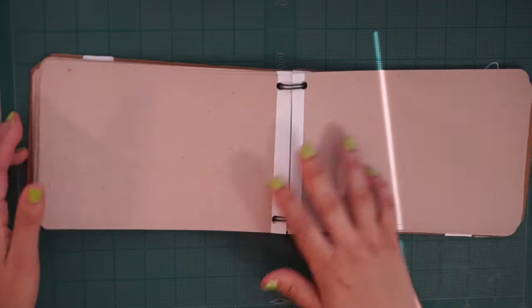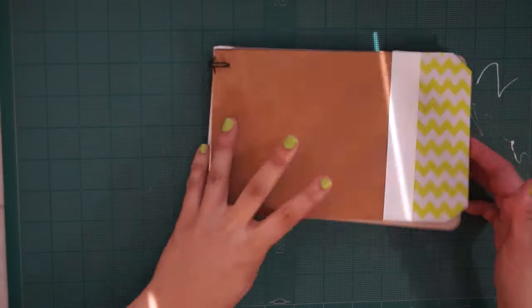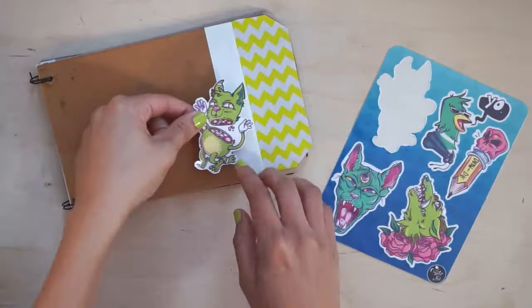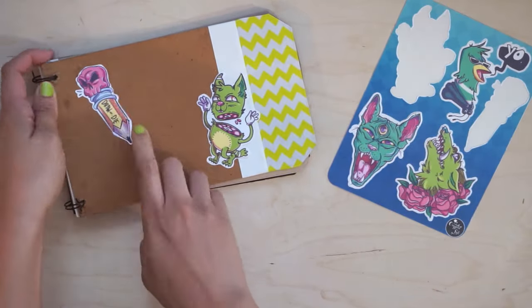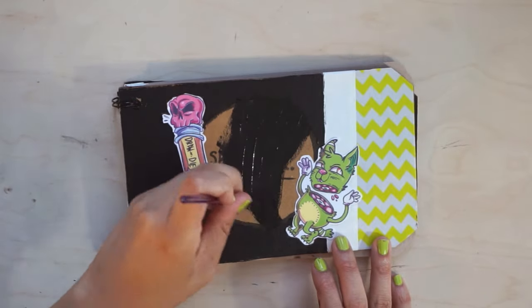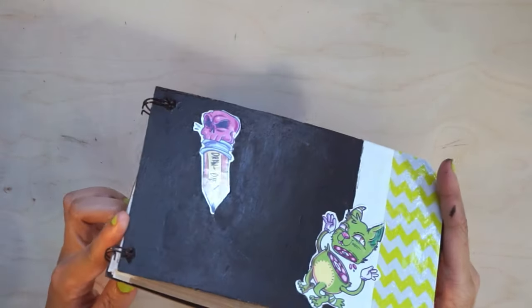After you loop these rings through your covers and pages, you're essentially done. Feel free to jazz it up with some stickers and drawings or something. I'm using these stickers I made from my shop since I had some extra. And then I painted it black and presto, it was complete.